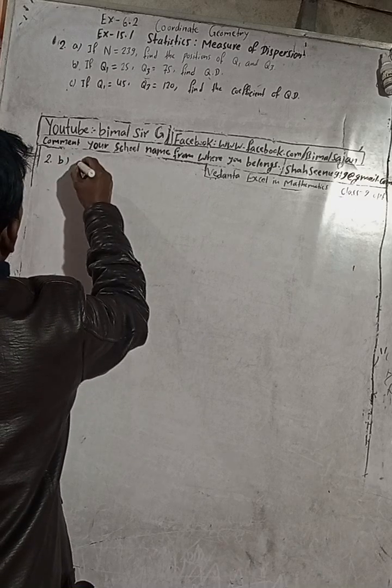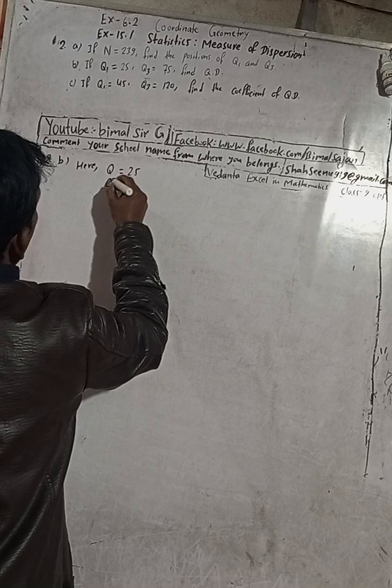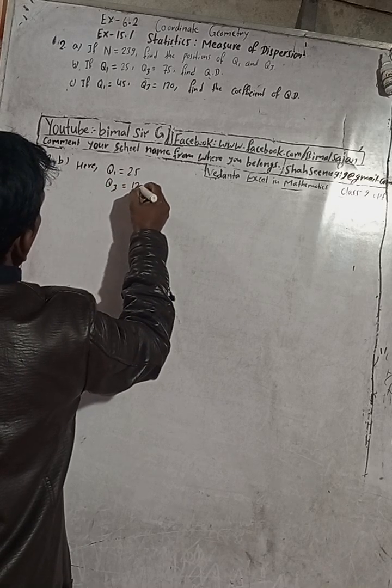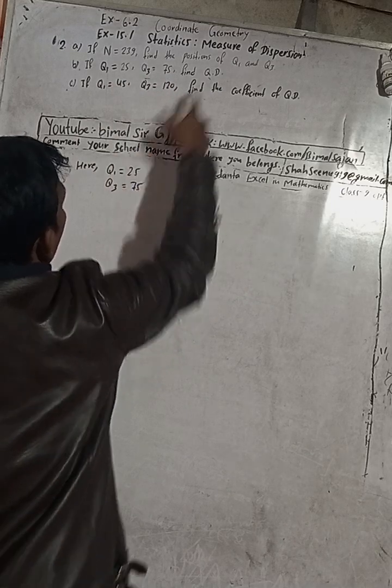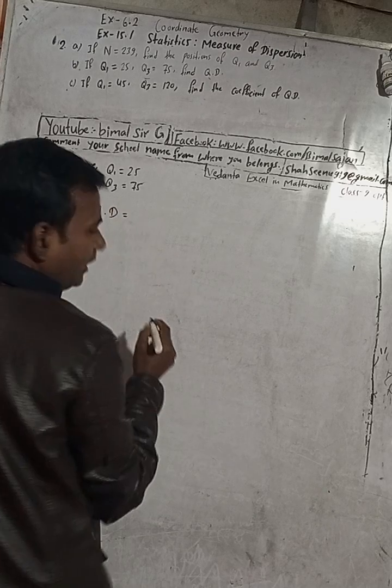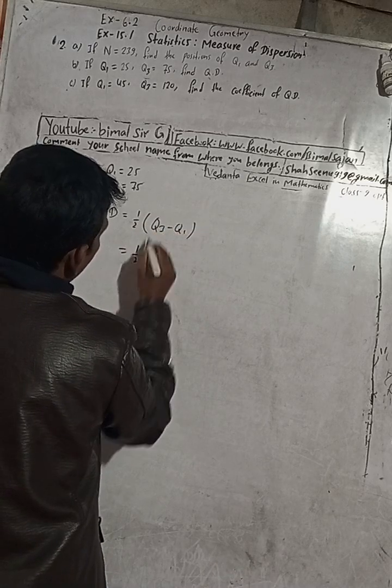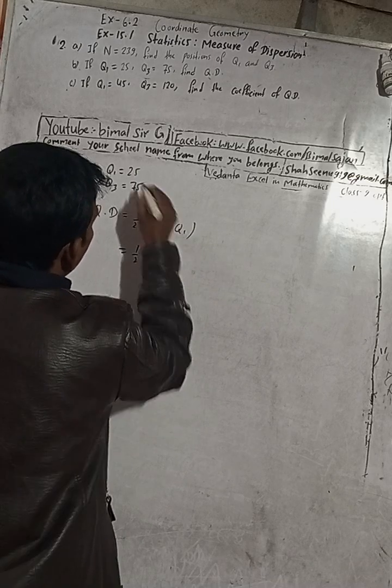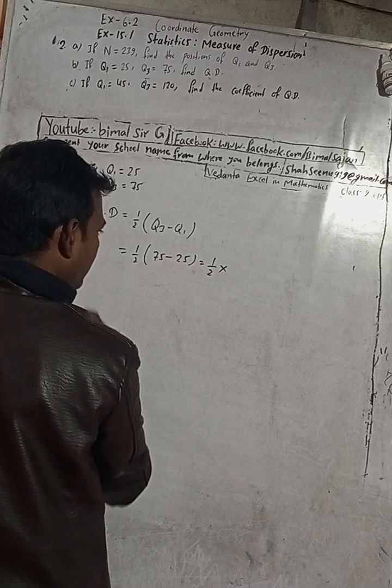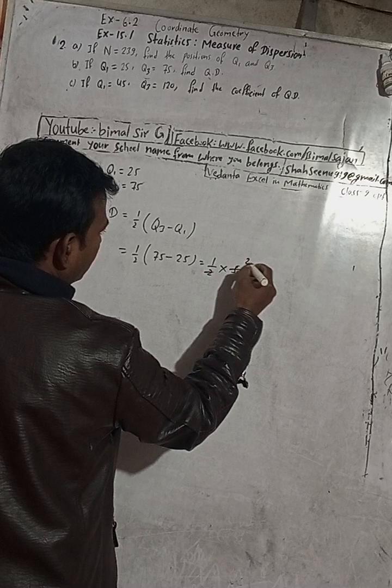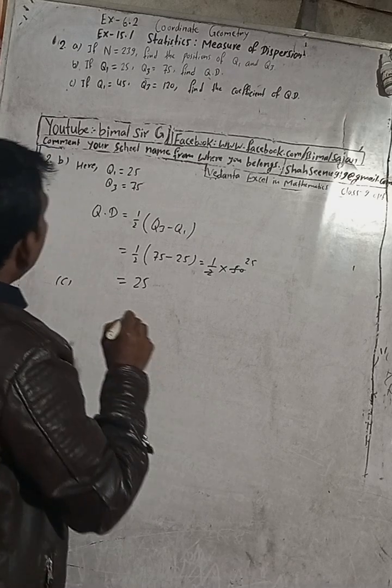Part (b): Q1 equals 25 and Q3 equals 75. We have to find QD, which is quartile deviation. The quartile deviation formula is 1/2 of (Q3 minus Q1). So half of Q3, which is 75, minus Q1, which is 25, equals 1/2 times 50 equals 25. Therefore our answer is 25.